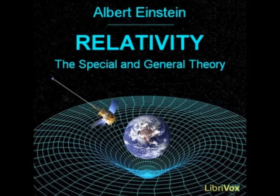Just as it was there impossible to construct a Cartesian coordinate system from equal rods, so here it is impossible to build up a system, or reference body, from rigid bodies and clocks, which shall be of such a nature that measuring rods and clocks, arranged rigidly with respect to one another, shall indicate position and time directly. Such was the essence of the difficulty with which we were confronted in section 23. But the considerations of sections 25 and 26 show us the way to surmount this difficulty. We refer the four-dimensional space-time continuum in an arbitrary manner to Gauss coordinates. We assign to every point of the continuum, or event, four numbers — x sub 1, x sub 2, x sub 3, and x sub 4 — coordinates, which have not the least direct physical significance, but only serve the purpose of numbering the points of the continuum in a definite but arbitrary manner.